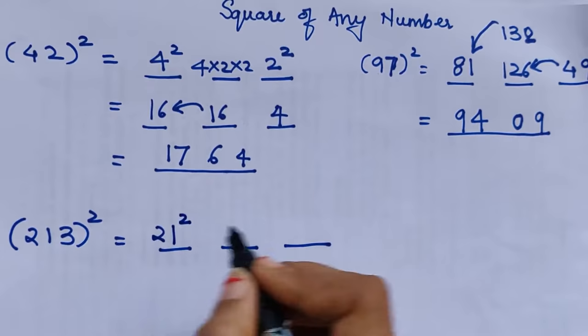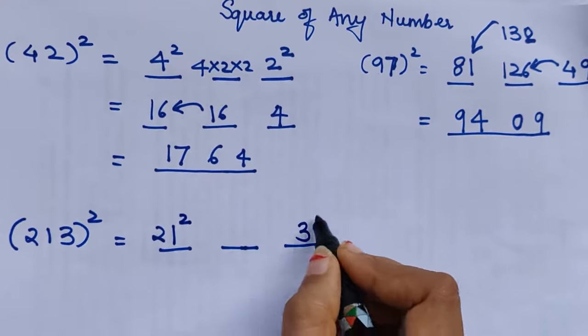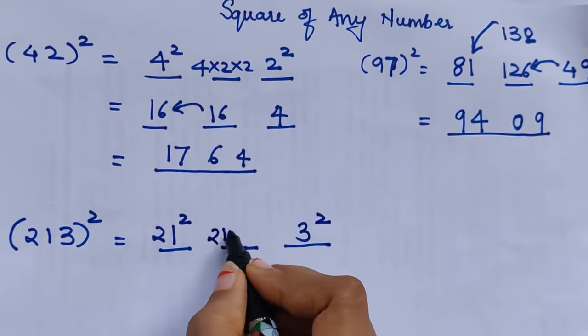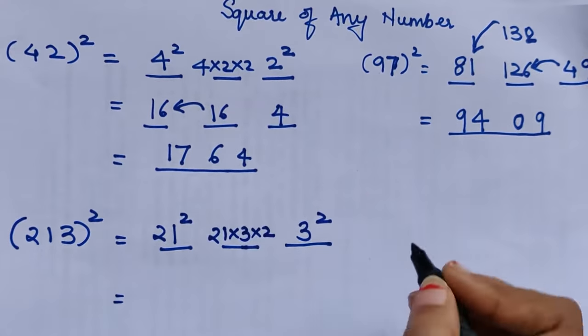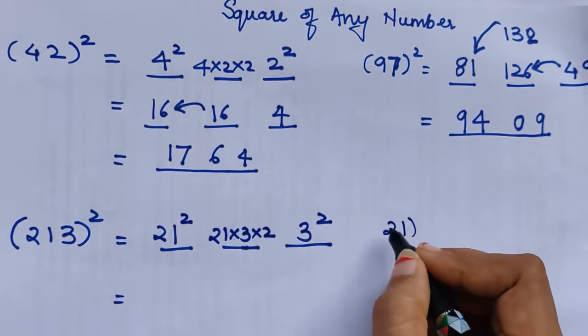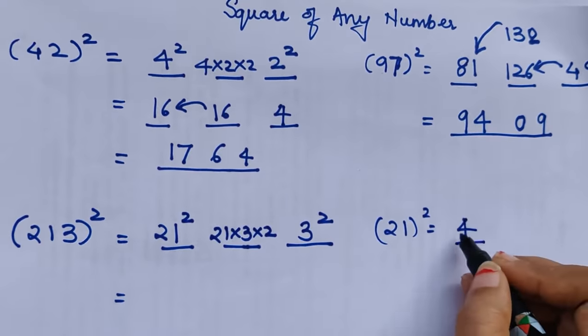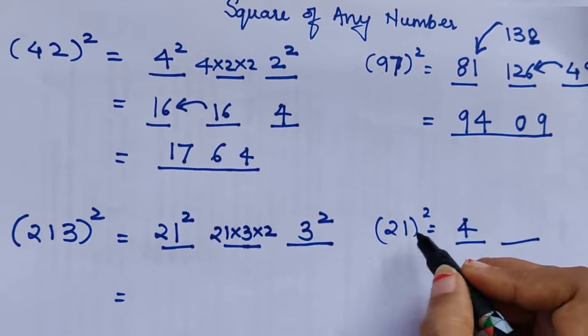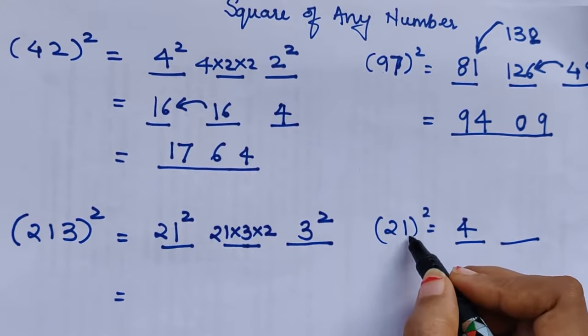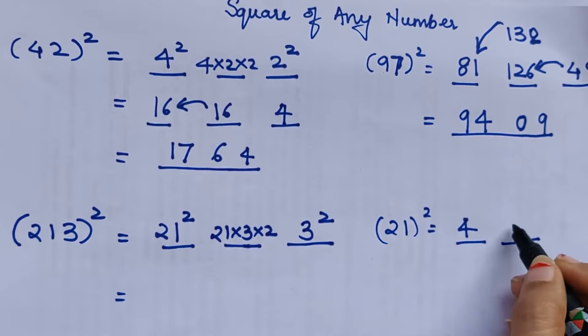So my first part will be 21 and my last part will be 3. I'll find square of 21 for my last part, I'll find square of 3, and in my middle part I'll multiply 21×3×2. Now you must be wondering how will I find square of 21. We'll use the same method: 2²=4, that's my first part. For my middle part, 2×1=2, which is again multiplied by 2, that is 4. And for my last part, square of 1 which is 1. So we can say that square of 21 is 441.